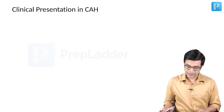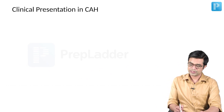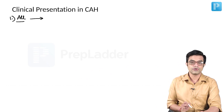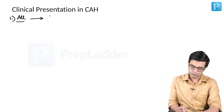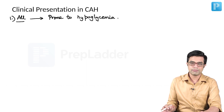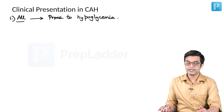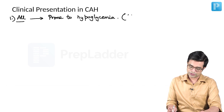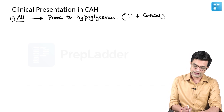Regarding clinical presentation in CAH: in all varieties of CAH, there is absolute or relative deficiency of cortisol, so they are all prone to hypoglycemia. It may be frank hypoglycemia in severe forms, or it may occur only when there is illness, injury, shock, stress, or surgery. They will be prone to hypoglycemia because of relatively low cortisol in all forms.